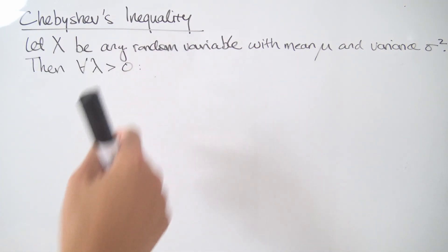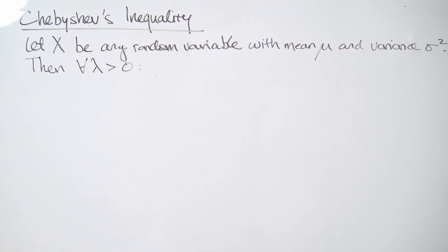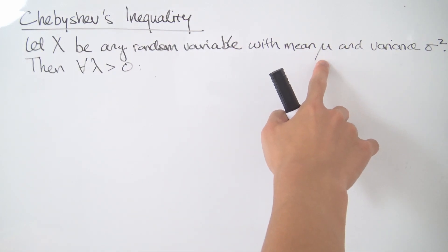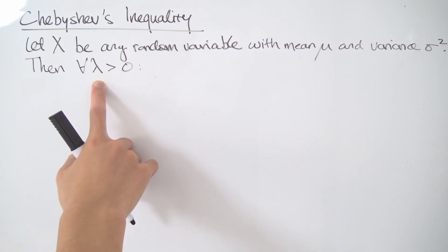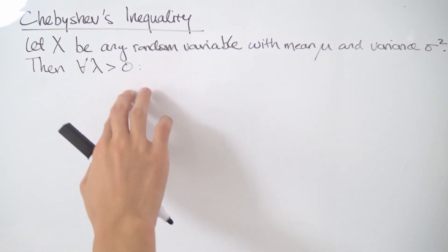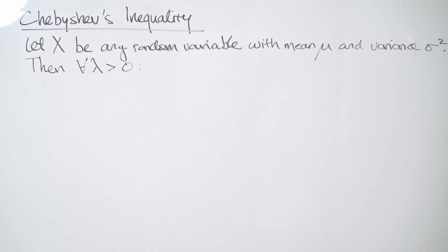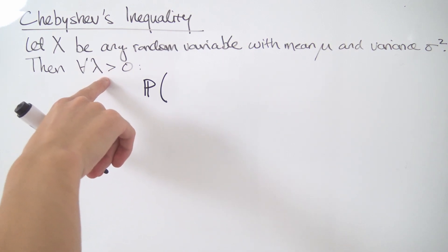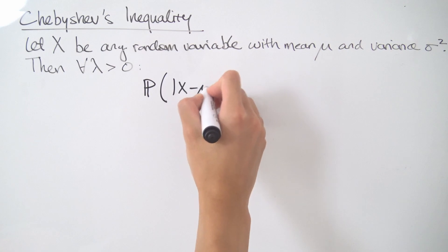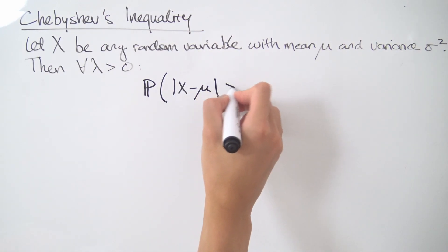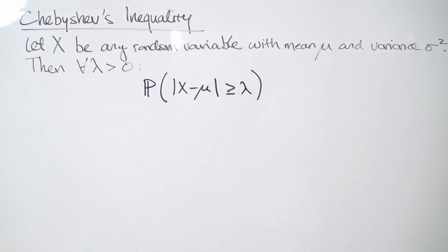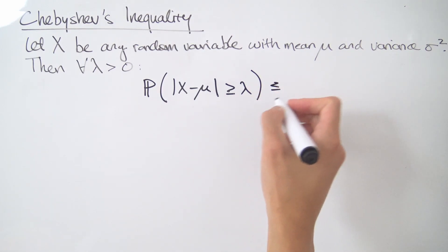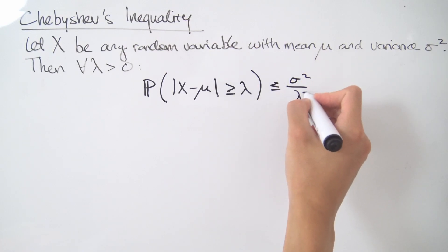We're going to let X be any random variable — and this is the nice thing about Chebyshev's inequality, it works for any random variable you want. So this random variable will have a mean of mu and a variance of sigma squared. Then we're going to pick some parameter lambda greater than zero, and essentially what we can do is bound the tail end of any distribution. In particular, we can take a look at the probability that we are at least lambda units away from the mean.